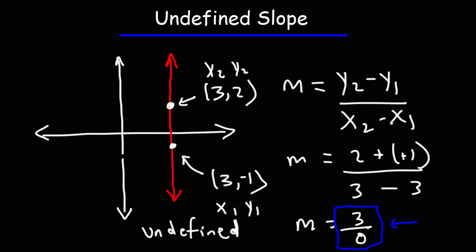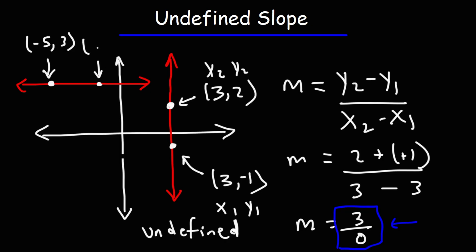Now let's compare that to a horizontal line. Let's identify two points on this line: this point is at (-5, 3) and this point is (-2, 3).